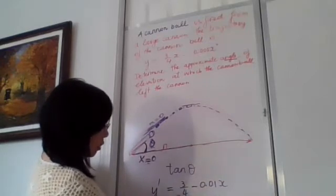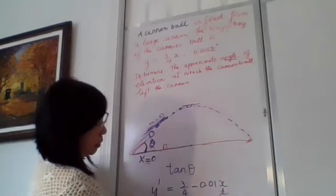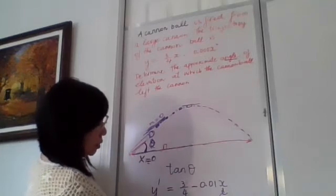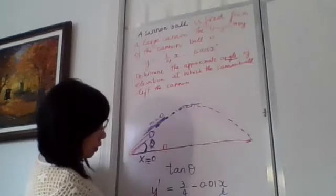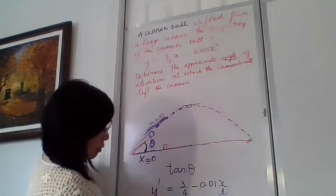So y prime will be equal to 3 over 4. If we substitute by zero, zero times anything is zero. So now we're left with the slope. And this slope is equal to tan theta. So now we know tan theta equals 3 over 4.